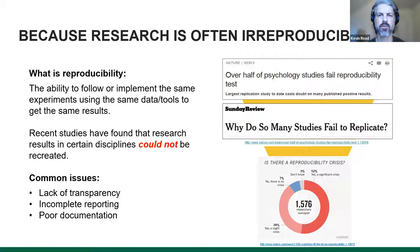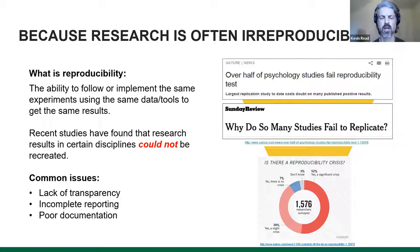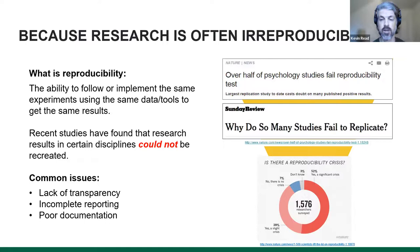There is also a reproducibility problem. Reproducibility is the ability to follow or implement the same experiments using the same data and tools to get the same results. I should be able to read your paper, follow the same methodology, use the same instruments or tools, and ultimately get the same results. Studies looking at reproducibility more broadly have found that major studies — ones that led to new treatments or drugs — could not actually be recreated, mainly because of poor documentation and incomplete reporting.